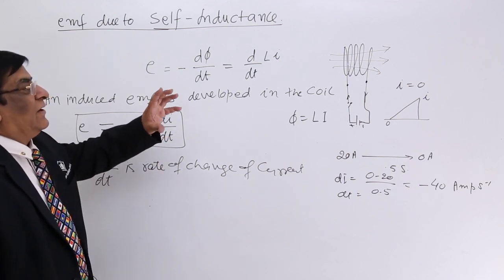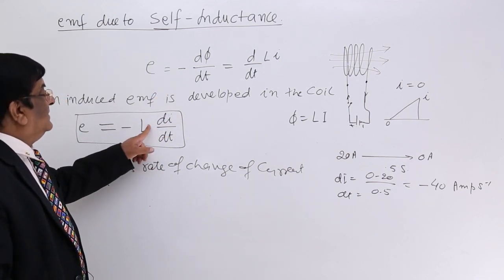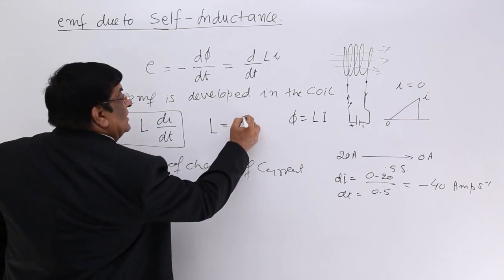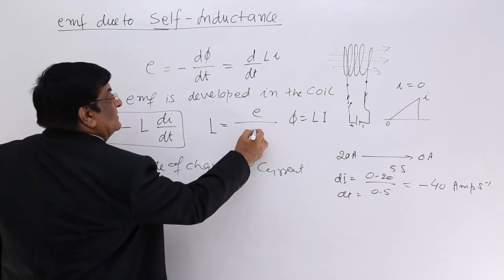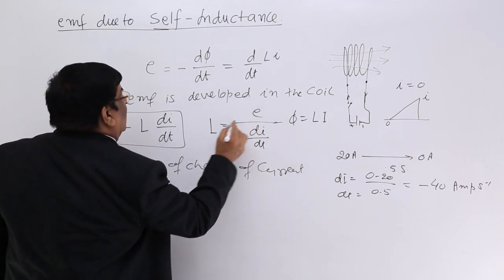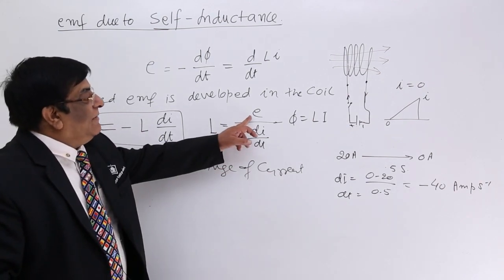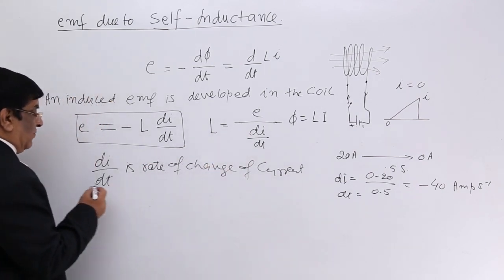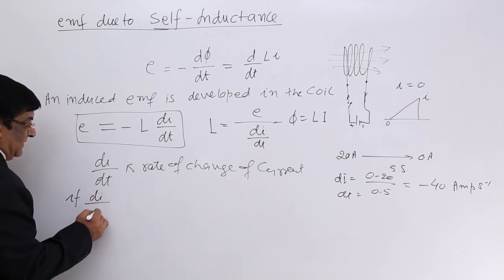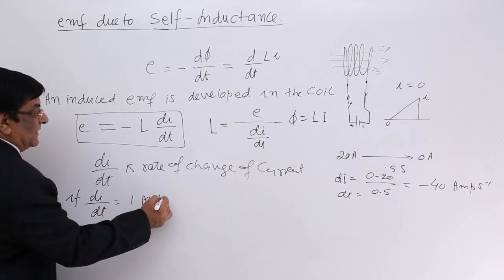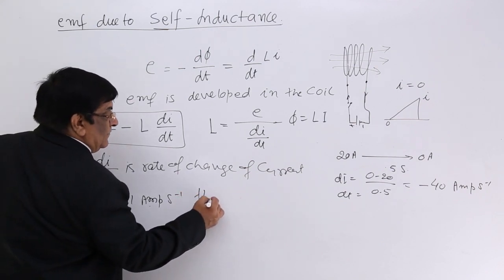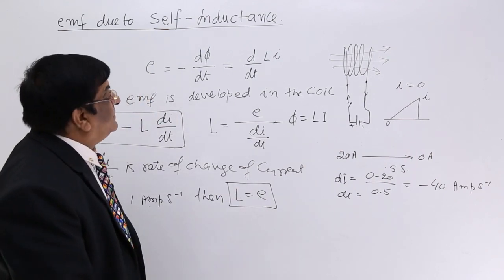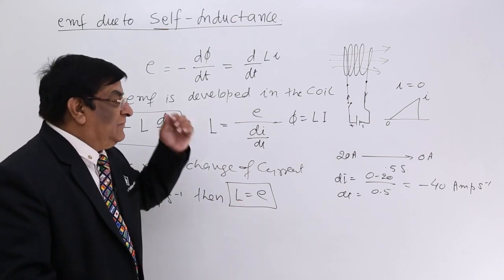So this is the EMF induced across a coil. We can now define self-inductance using this EMF: L equals E divided by di by dt in magnitude. So L equals induced EMF divided by di by dt. If we make di by dt equal to 1 ampere per second, then L equals E, the induced EMF. This gives us another definition of the coefficient of self-inductance.